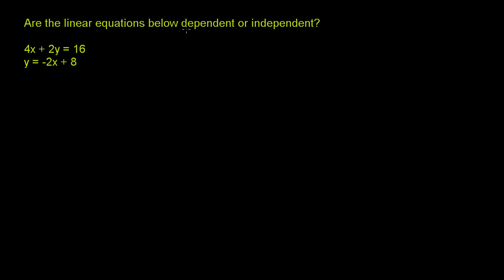Are the linear equations below dependent or independent? They give us two equations — a system of equations. As a little bit of review, let's think about the different types of relationships between lines we can have when we're dealing with two variables in two dimensions.